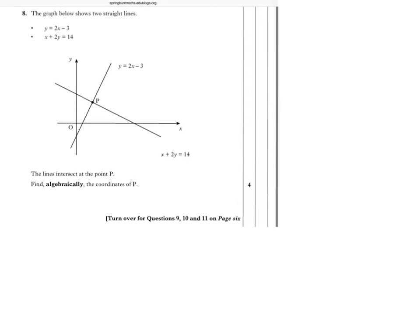Okay, Section 8 Question 4. The graph below shows two straight lines: y equals 2x minus 3, and x plus 2y is equal to 14. The lines intersect at the point P. Find algebraically the coordinates of P.